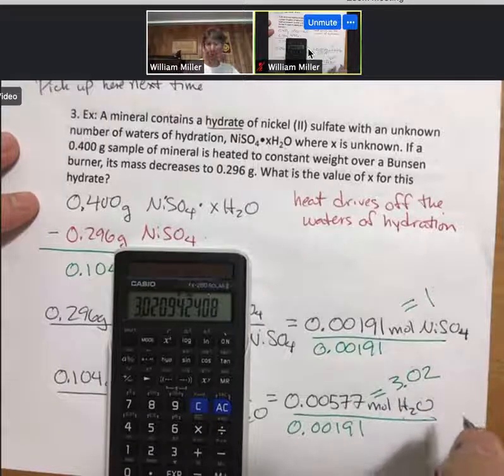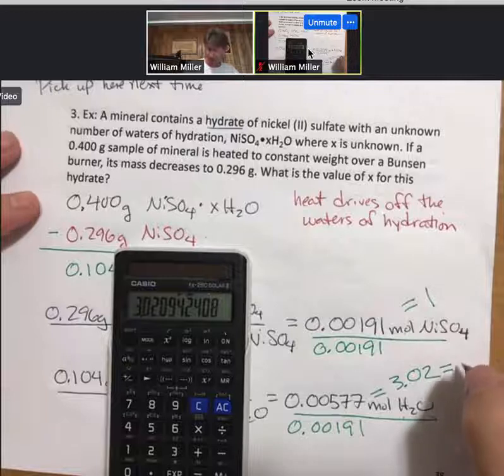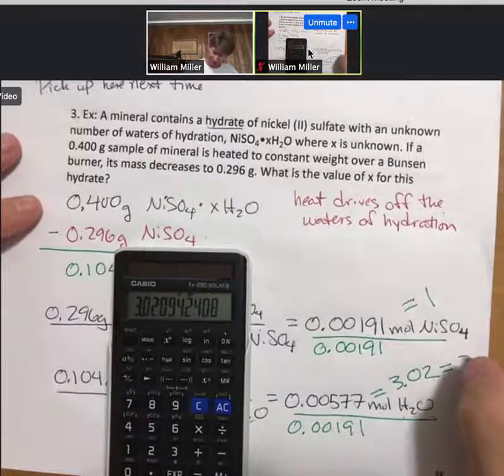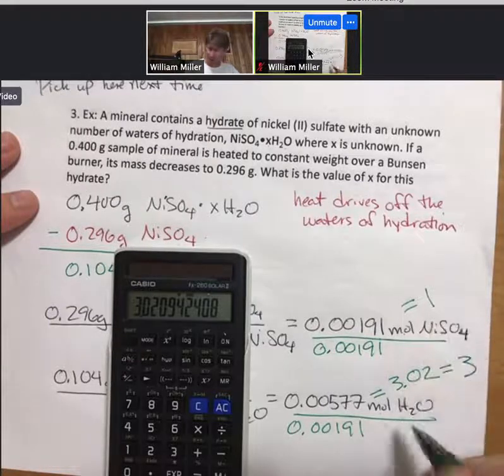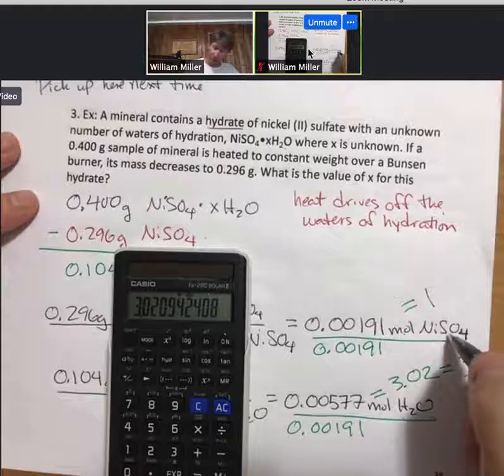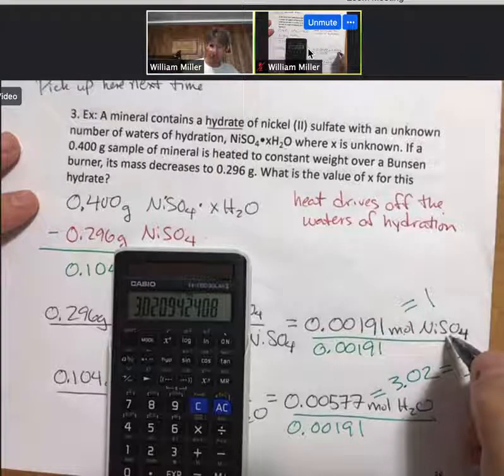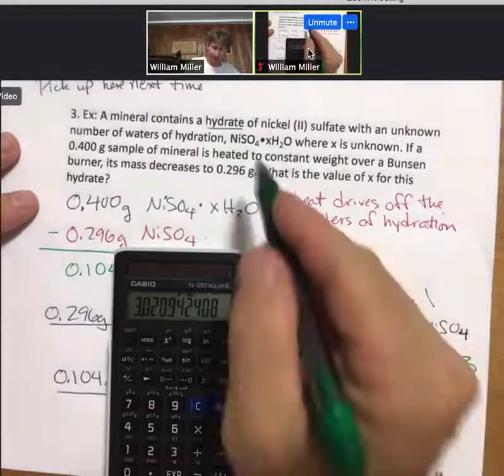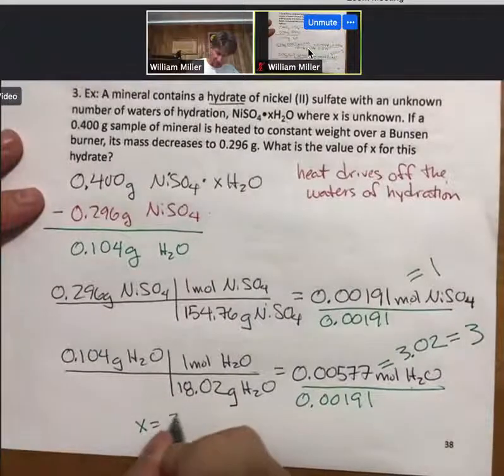And 3.02 is very close, except for basically sig figs and rounding errors, to the number 3. And what this is telling us is there's a 3 to 1 ratio, 3 moles of H2O for every 1 mole of nickel 2 sulfate. And that 3 is our X. So I'm going to write this down here. So X equals 3.